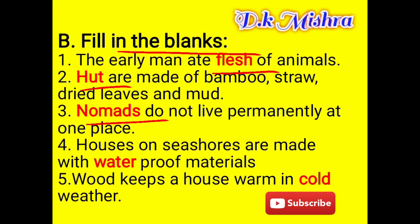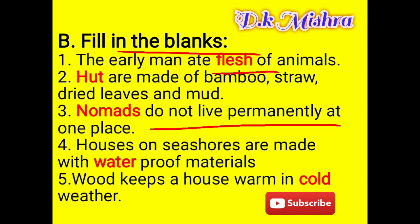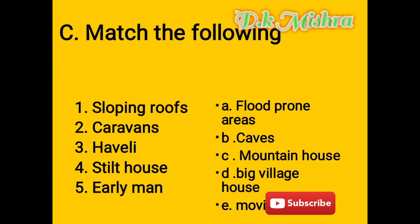Fill in the blanks: The early man ate flesh of animals. Huts are made of bamboo, straw, dry leaves, and mud. Nomads do not live permanently at one place. Houses on the seashore are made with waterproof material. Wood keeps a house warm in cold weather.